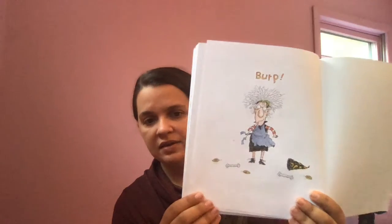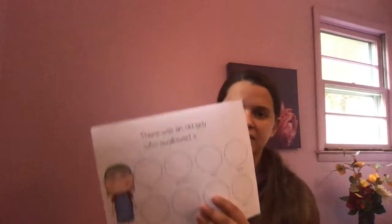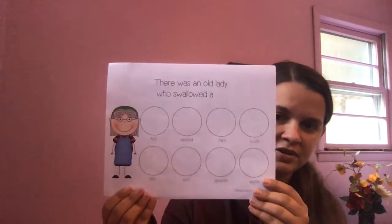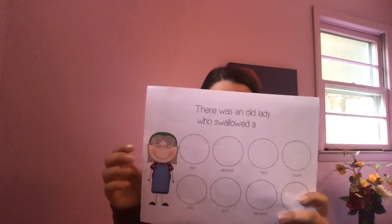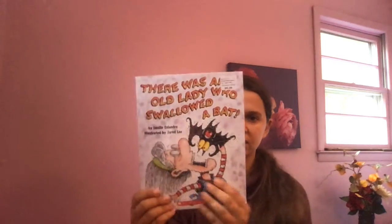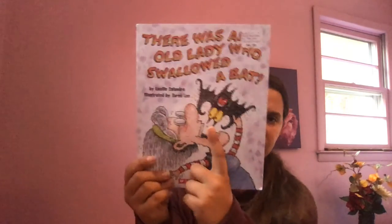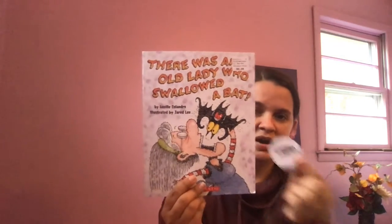The end. If you're completing this sheet, we can now glue it together. Let's think about what she swallowed first. Does anyone remember? We can go back through our story. What did she swallow first? This is a bat. So the first picture we're going to glue is a bat.